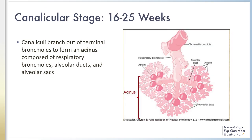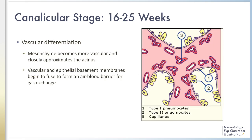The canalicular stage occurs from week 16 to week 25. In this stage, canaliculi differentiate from the terminal bronchioles to form the functional unit of the lung, the acinus. The acinus is composed of about six respiratory bronchioles, alveolar ducts, and alveolar sacs. In this stage, mesenchymal vascular differentiation continues in parallel to epithelial differentiation.